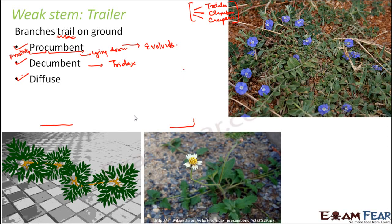The third type is diffuse. The term diffuse means a mixture — spreading out in different directions, much like diffusion in chemistry or physics. These are basically stems with branches spreading out in all directions. One example of diffuse trailing would be boerhavia, where the stems trail on the ground with branches spreading along all directions.